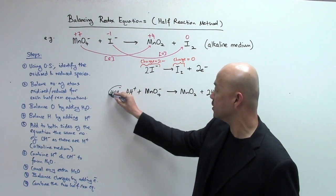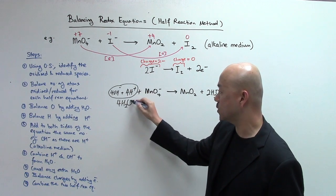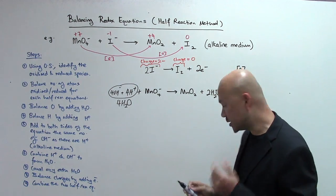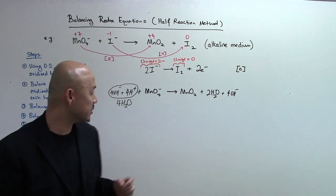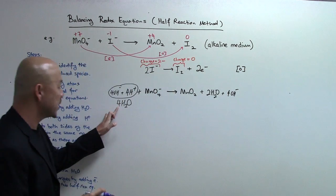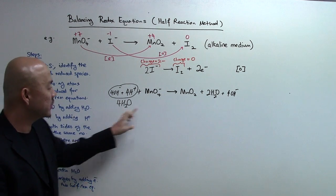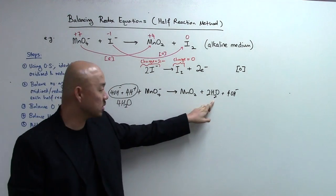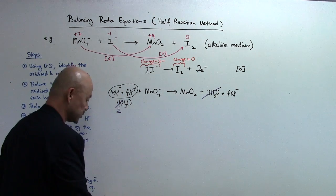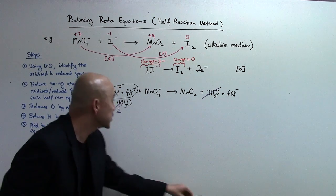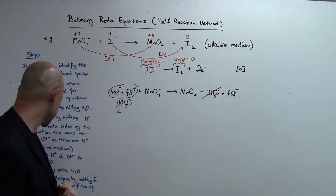We then combine H+ and OH- to form water, giving us 4H2O on that side. Next, we cancel the water. On one side there are 4 water molecules and on the other side there are 2, so we cancel and it becomes 2 water molecules remaining. The water is now resolved.